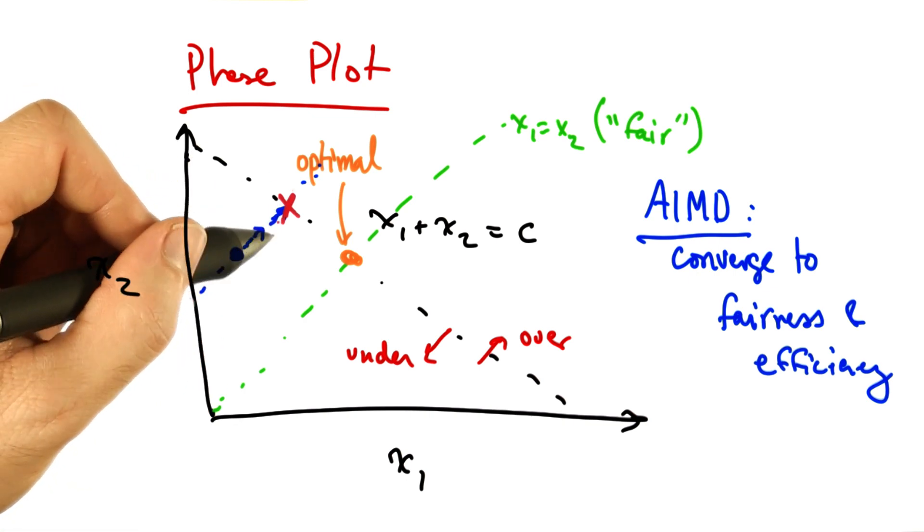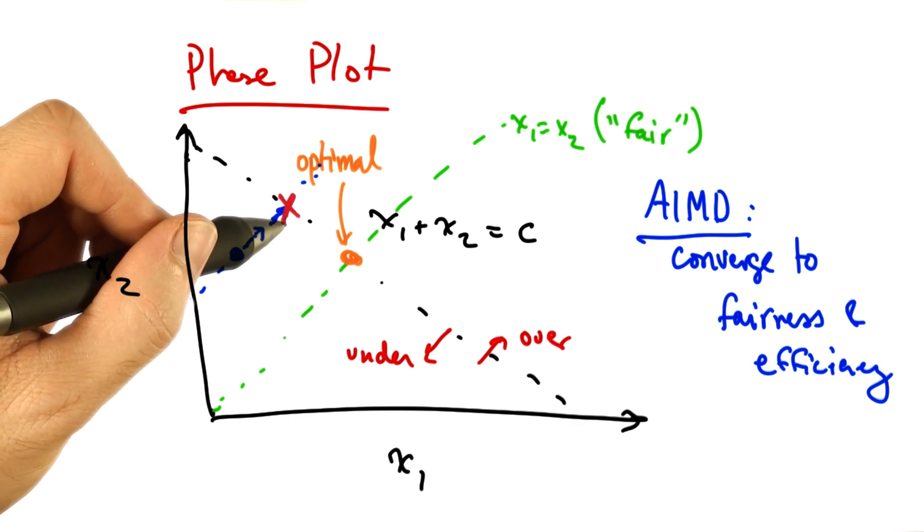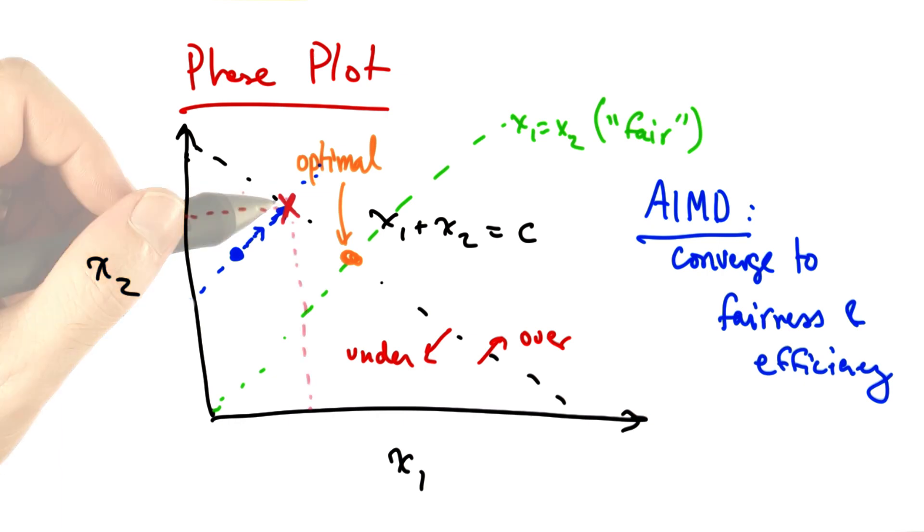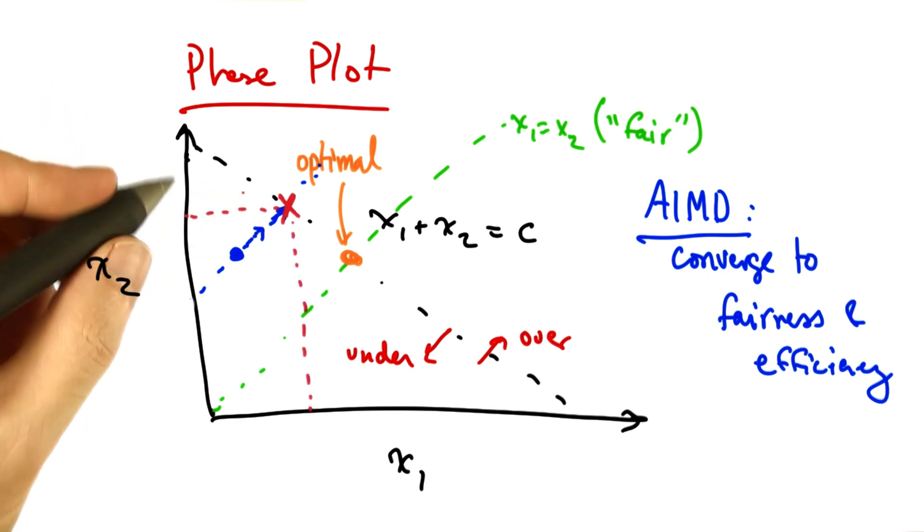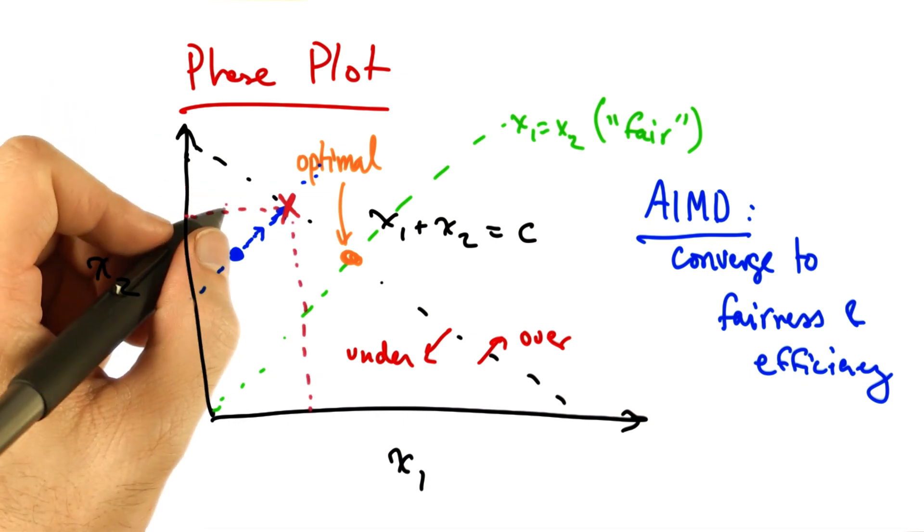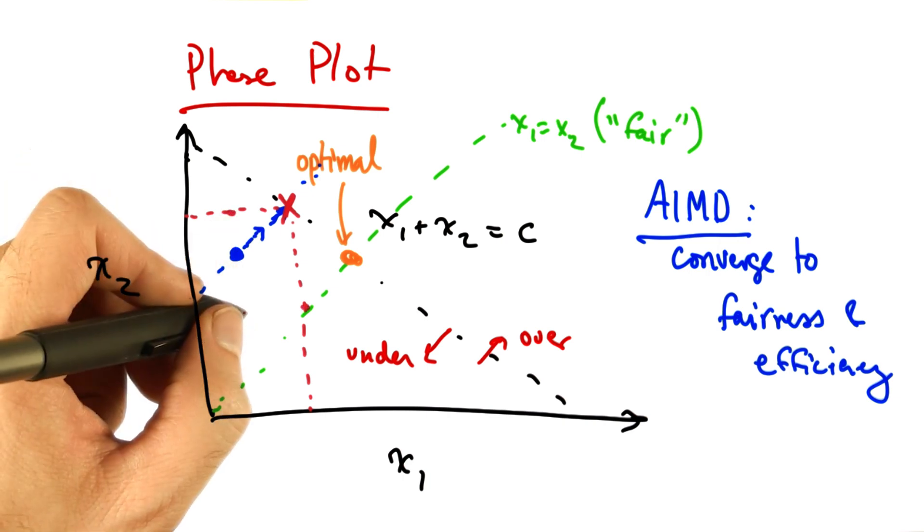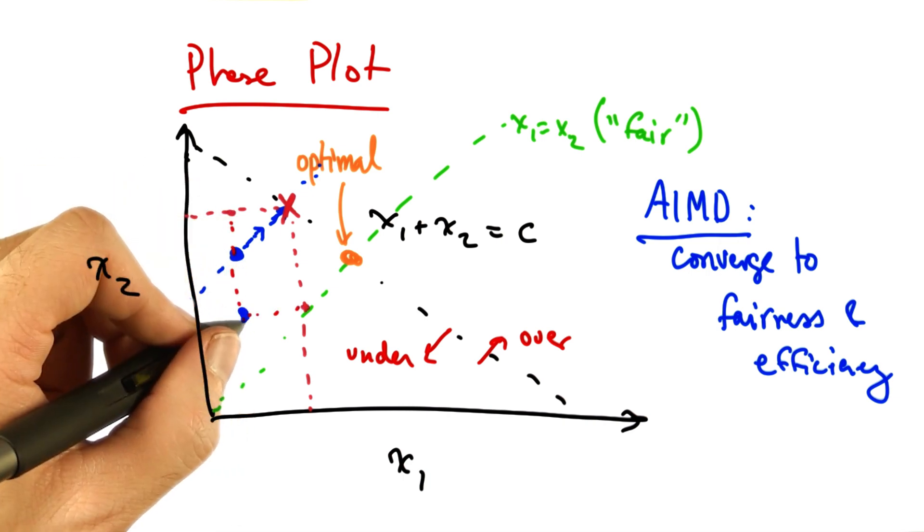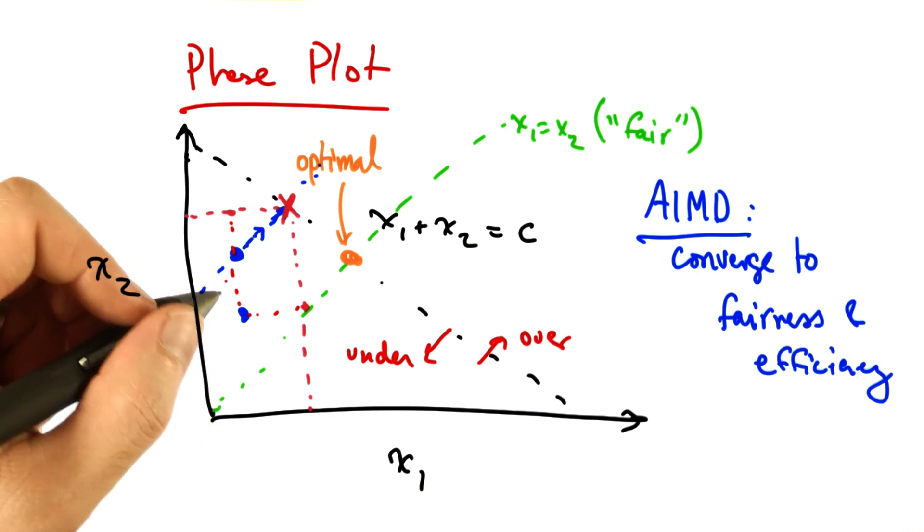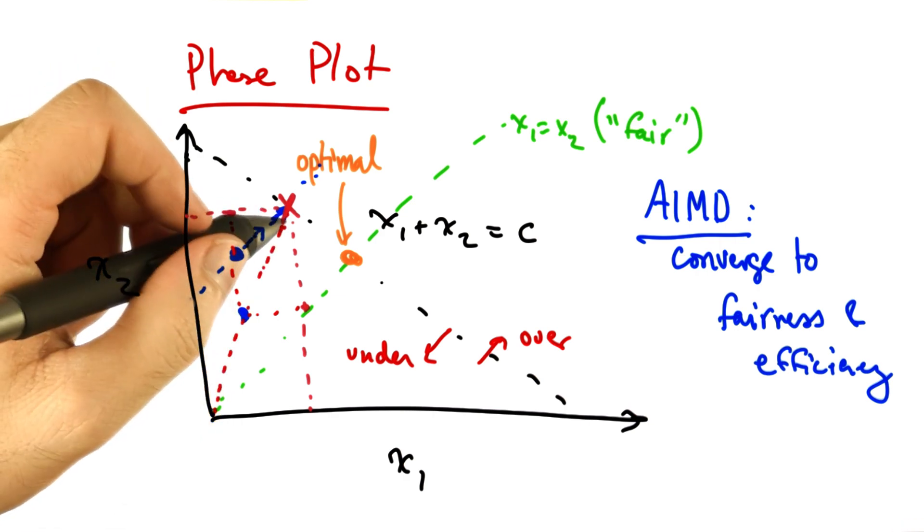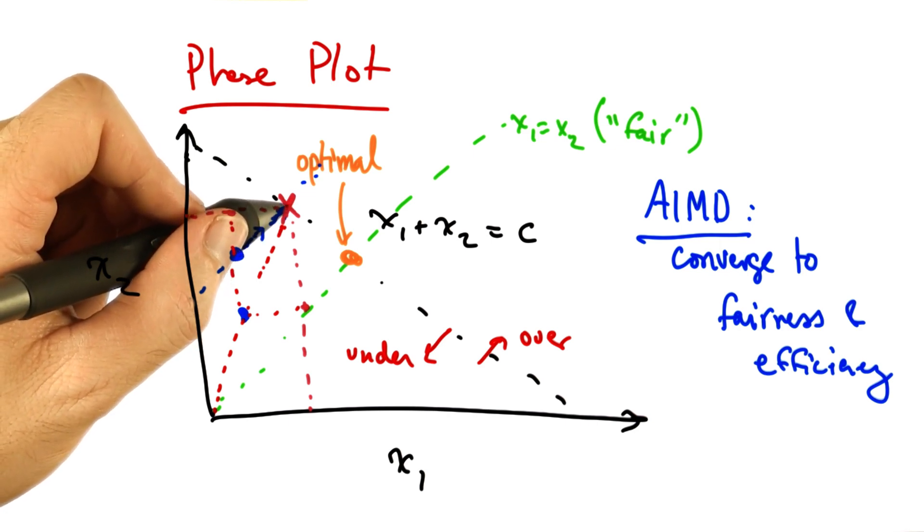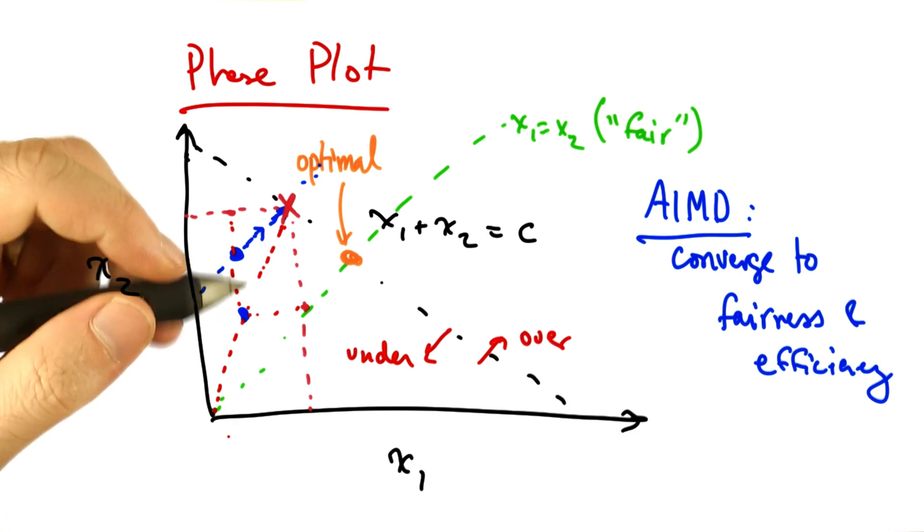In multiplicative decrease, each sender decreases its rate by some constant factor of its current sending rate. For example, suppose that each sender decreases its sending rate by half. The resulting operating point is shown by this second blue dot. Note that this new operating point, as a result of multiplicative decrease, is on a line between the point on the efficiency line that the senders hit and the origin.